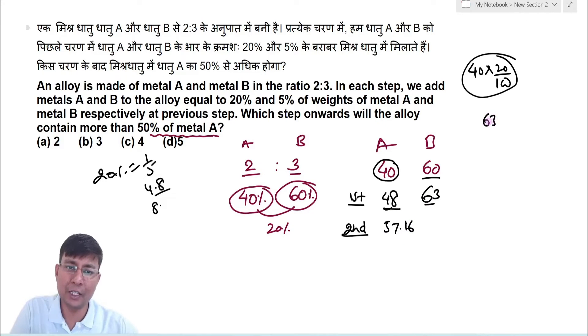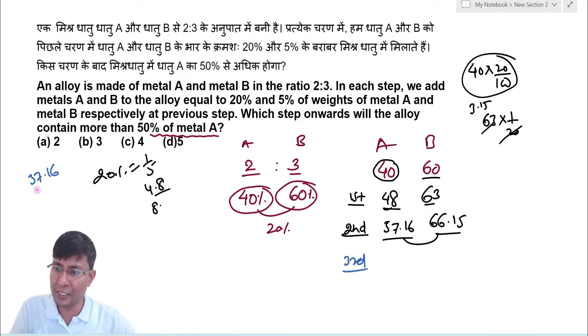63, 5%, 5 upon 20 is 3. 66.15. 57.16, 10% is 5.716. 68 point something, let's say 68.4.